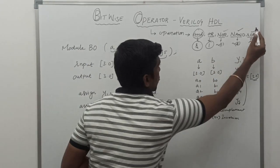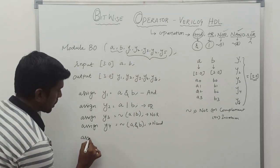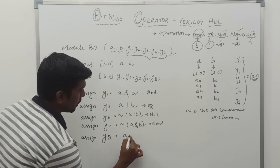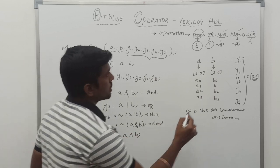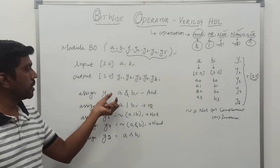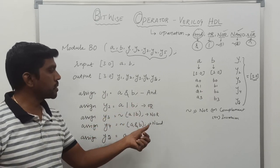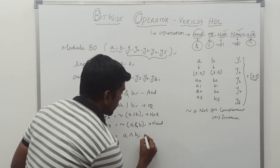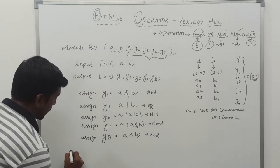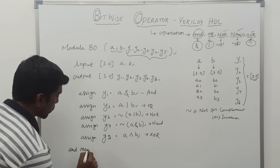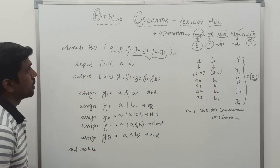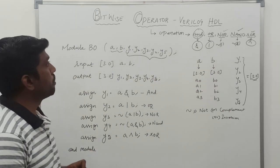The final one is XOR. Assign Y5 equal to A XOR B. The caret symbol is the symbol of XOR. So here we have done the five operations: AND, OR, NOR, NAND, and XOR. Finally, you close the statement and close the module. This is a simple program for the bitwise operator.